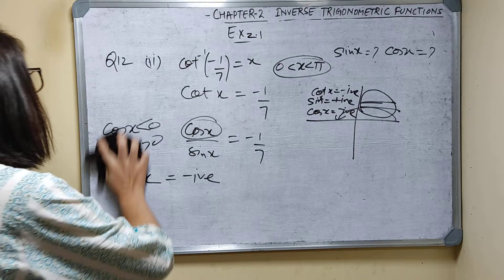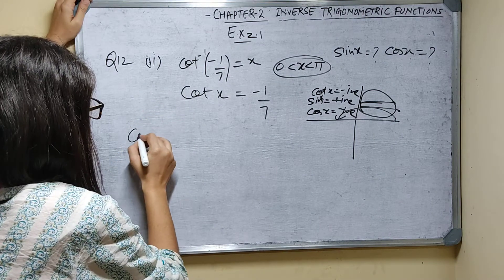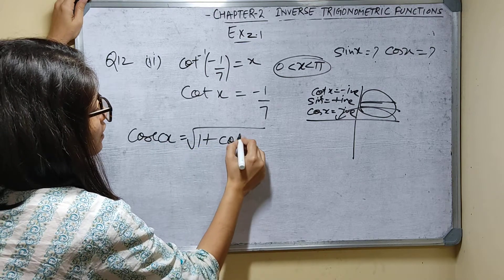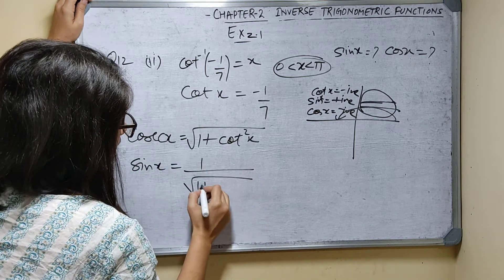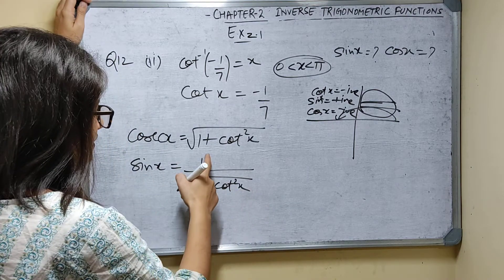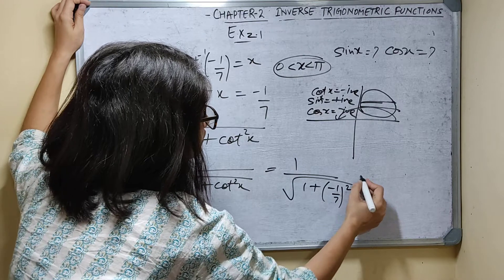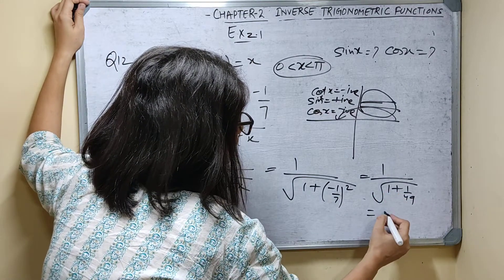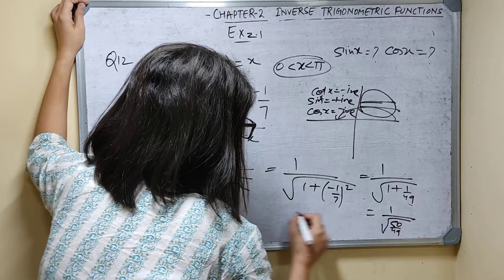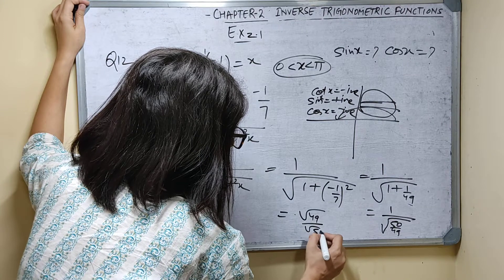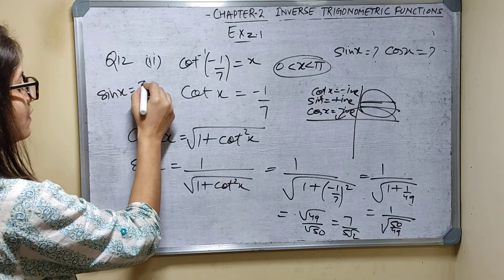To find sin x, I use: sin x equals 1 upon root of 1 plus cot squared x. Since sine will be positive, sin x equals 1 upon root of (1 plus (minus 1 by 7) squared) = 1 upon root of (1 plus 1 by 49) = 1 upon root of (50 by 49) = root 49 upon root 50 = 7 upon 5 root 2. So sin x equals 7 upon 5 root 2.